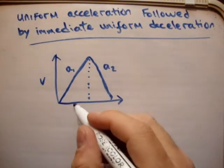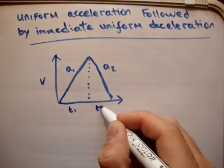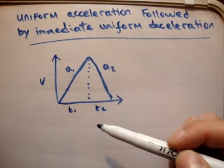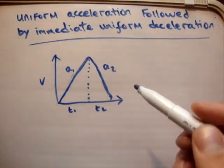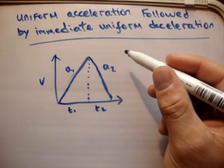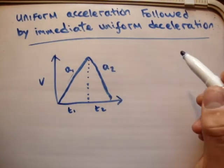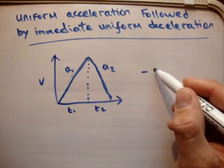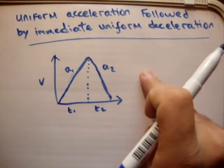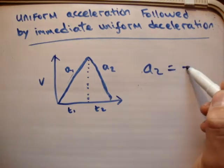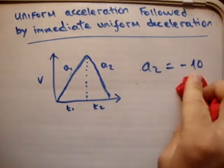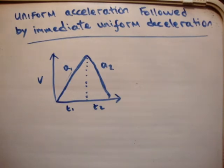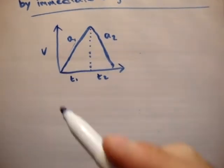Let's try and do this. We have t1 and t2, so we're accelerating at acceleration a1 for time t1, and decelerating for time t2 at acceleration a2. I know this is a deceleration so it should be negative, but since I'm just calling it a2, the sign will come out anyway — for example a2 could turn out to be minus 10.